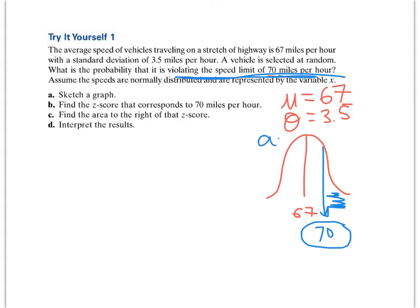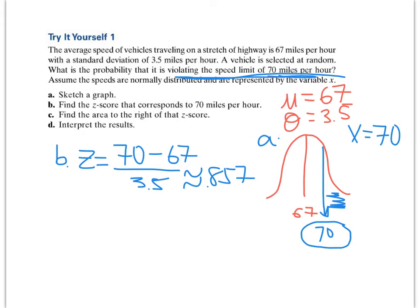We did A. B, we want our z-score. So the z-score is going to equal my x, 70, minus my μ or my mean 67, divided by the standard deviation of 3.5. So you guys should be doing this as well. 70 minus 67 equals divided by 3.5 equals, and I get a z-score of approximately .8571. We'll do .857.